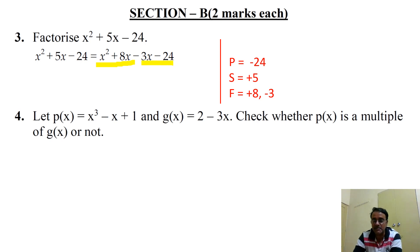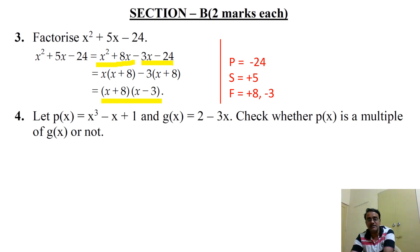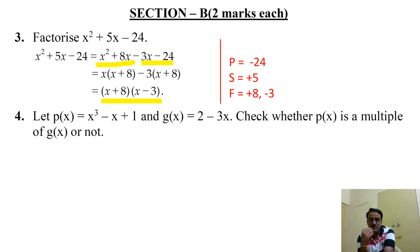The common factor between the first two terms is x, and between the last two terms is -3. Taking these out, we get the factors (x + 8)(x - 3).